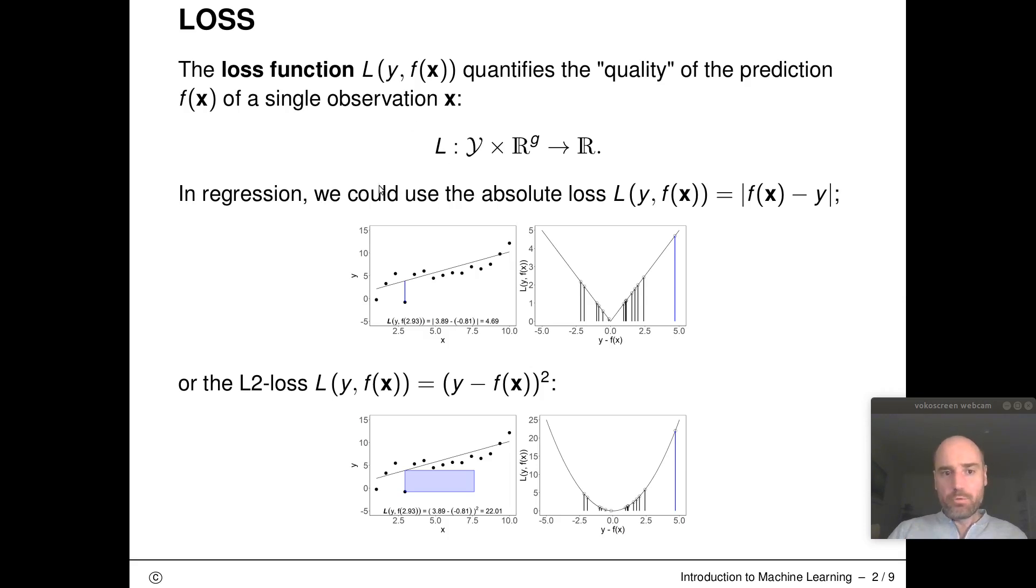In regression we could for example use the absolute loss function L(y, f(x)) = |f(x) - y|, or the L2 loss L(y, f(x)) = (y - f(x))². We'll study the details of these loss functions and their differences in much more detail later. Here I just want to introduce them as possible examples.